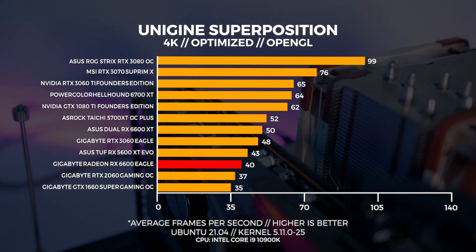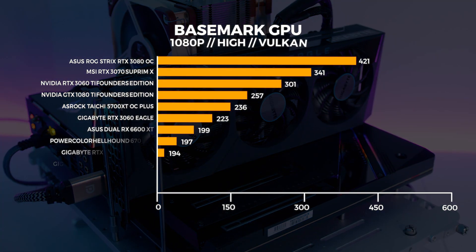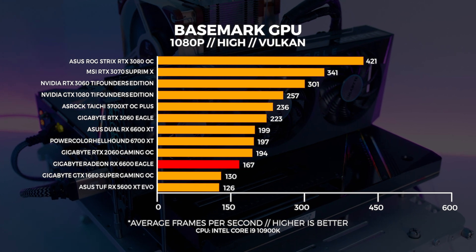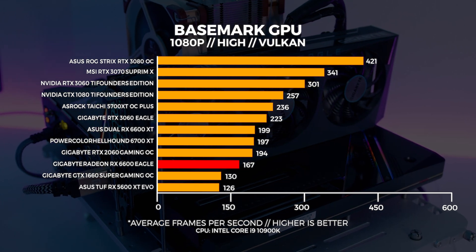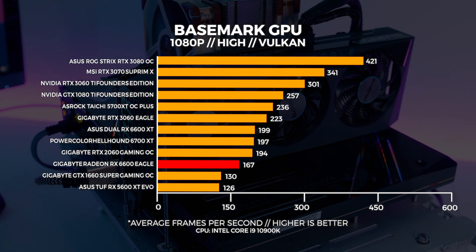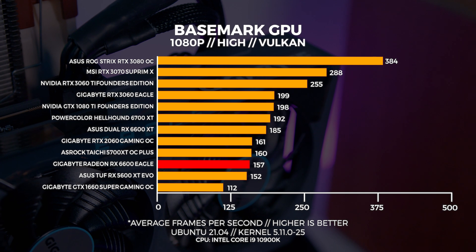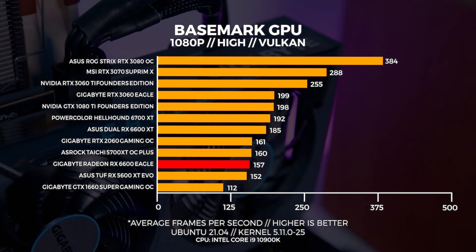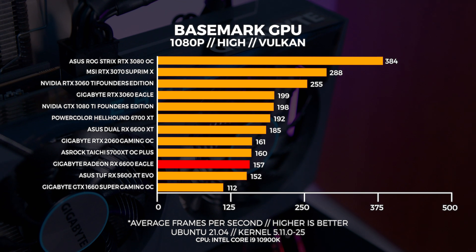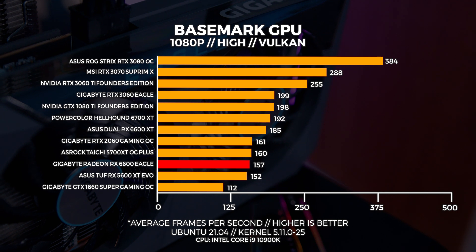In Linux at 4K we're seeing a pretty similar pattern with the 6600 once again coming in behind the 5600 XT — not what I was expecting, a bit bizarre, but that is what it is. Next up is Basemark GPU, which gives us a great indication of Vulkan performance in both Windows and Linux. At 1080p in Windows the 6600, much like other AMD GPUs, does not perform as well as its Nvidia counterparts. Don't be fooled by Basemark's high FPS scores though — this is just a benchmark.